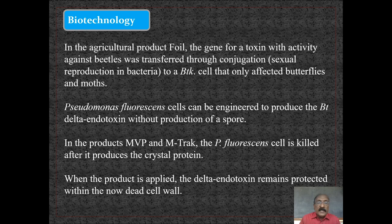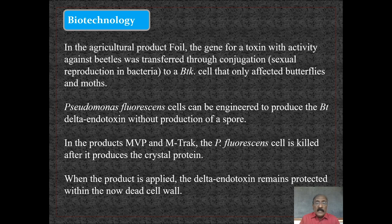In the field of biotechnology: the gene for the toxin with activity against beetles was transferred through conjugation — that is, sexual reproduction in bacteria — to a Bt kurstaki cell that only affected butterflies and moths. Pseudomonas fluorescens cells can be engineered to produce the Bt delta endotoxin. In the products MVP and M-Trak, the Pseudomonas fluorescens cell is killed after it produces the crystal protein. When the product is applied, the delta endotoxin remains protected within the dead cell wall.